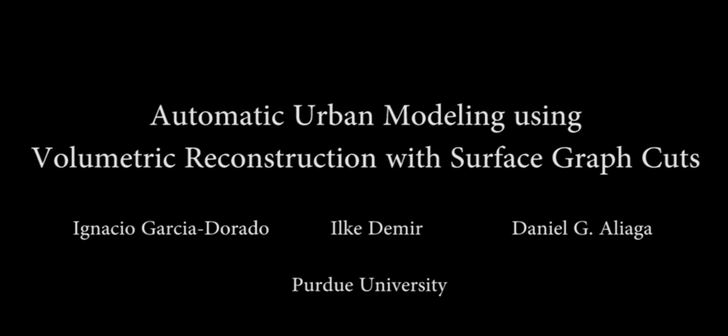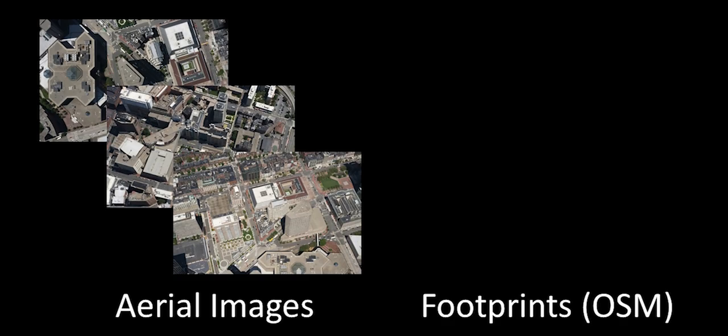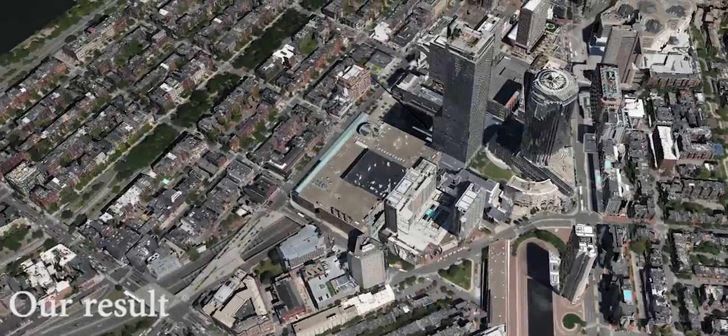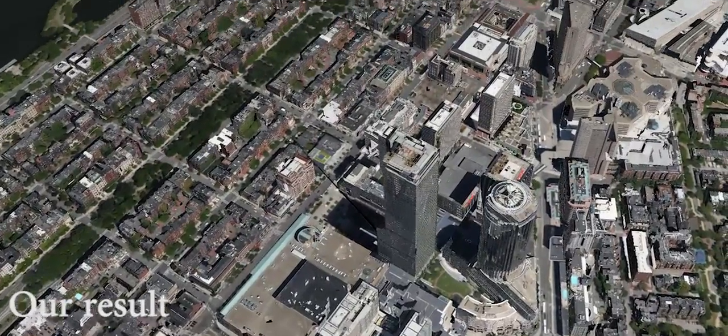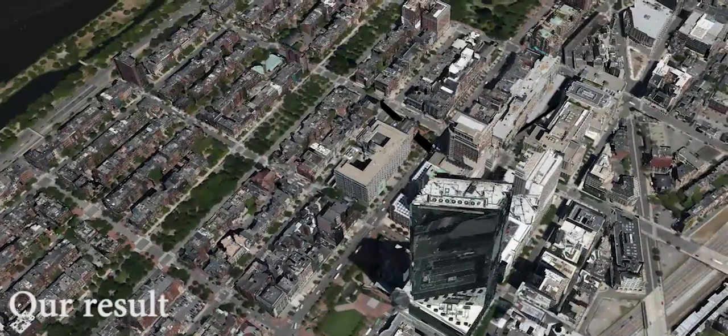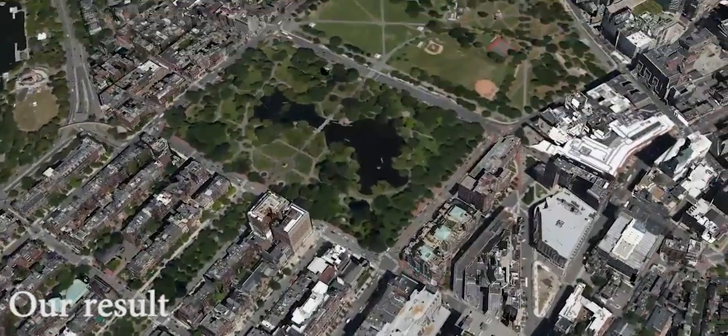We present an approach to automatically reconstruct buildings densely spanning a large urban area. Our approach takes as input calibrated aerial images and urban metadata, such as parcel and building outlines, and overcomes the challenges due to sparse sampling, frequent occlusions, and camera calibration errors by using a novel voxel occupancy and surface graph cut algorithm.